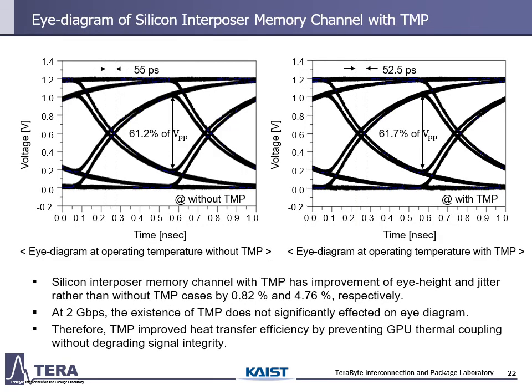This is the simulated eye diagram of the silicon interposer memory channel depending on TMP. As you can see, there are no clear differences between the two eye diagrams. The silicon interposer memory channel with TMP shows improvement of eye height and JETAR compared to without TMP by 0.82% and 4.76% respectively. At 2 Gbps, the existence of TMP does not significantly affect the eye diagram. Therefore, TMP improves heat transfer efficiency by preventing GPU thermal coupling without degrading signal integrity.